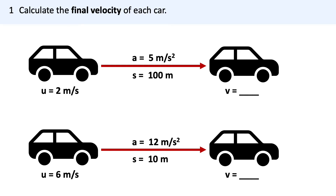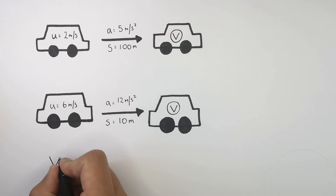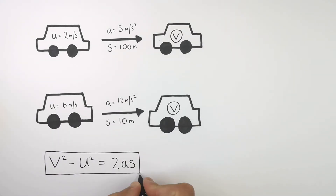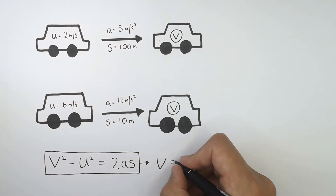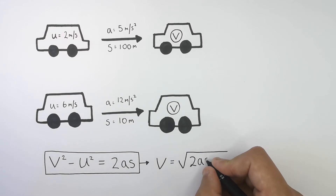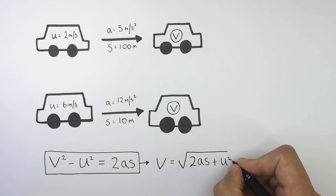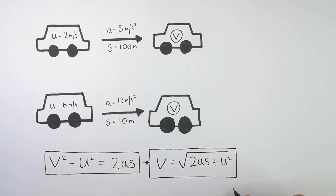This is the problem you will learn how to solve. Press pause to attempt it. The method and the answer will follow. We need to recall the formula: v squared minus u squared equals 2as. Rearranging for v, the final velocity: v equals the square root of 2 times acceleration times displacement plus the initial velocity squared — that's v equals the square root of 2as plus u squared.